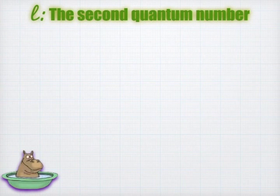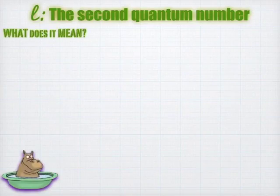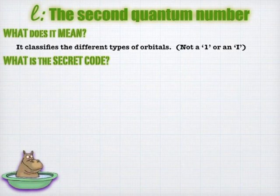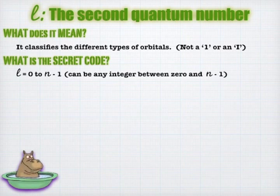The second quantum number is a lowercase l, and it designates what type of orbital you live in. We define orbital as where electrons live. You can have up to two electrons living in an orbital. An orbital is a region of space where there's a 90% chance of finding an electron. L cascades off of N, which means that you can have any L from 0 to N-1, N being the energy level you're on.